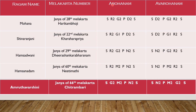From the same Mohana ragam, if you just replace Da with Ni — that is, remove Chathushrutidaivatham and replace it with Kakali Nishadham — you get Hamsadvani. The rest of the notes are the same. Sariga padasa is Mohana; Sariga panisa saani pagharisa is Hamsadvani.